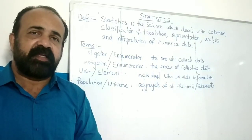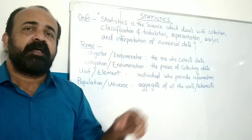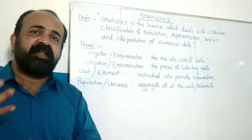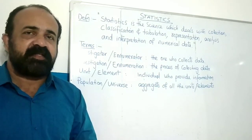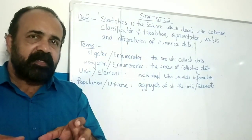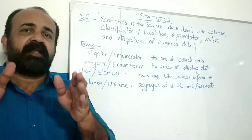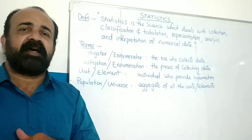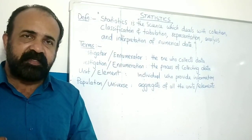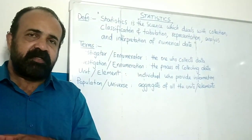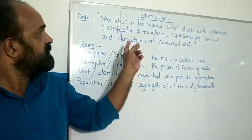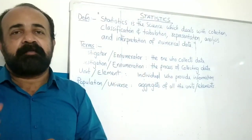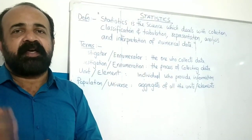For example, a teacher collects the marks of students. The marks are organized into first class, second class, and so on — this is classification and tabulation. The representation can be diagrammatic.